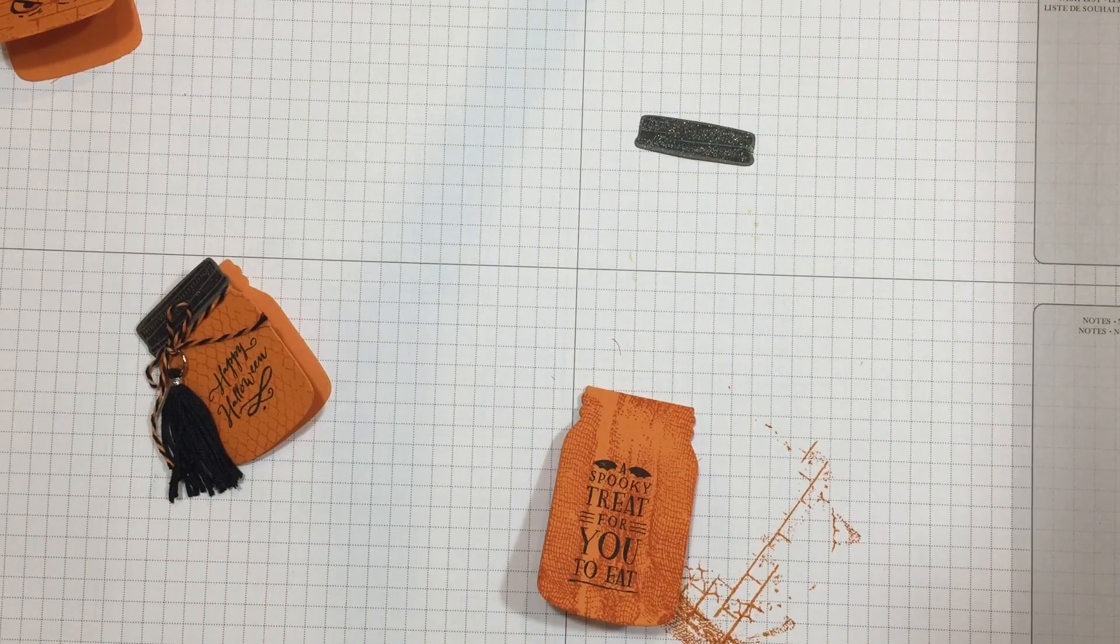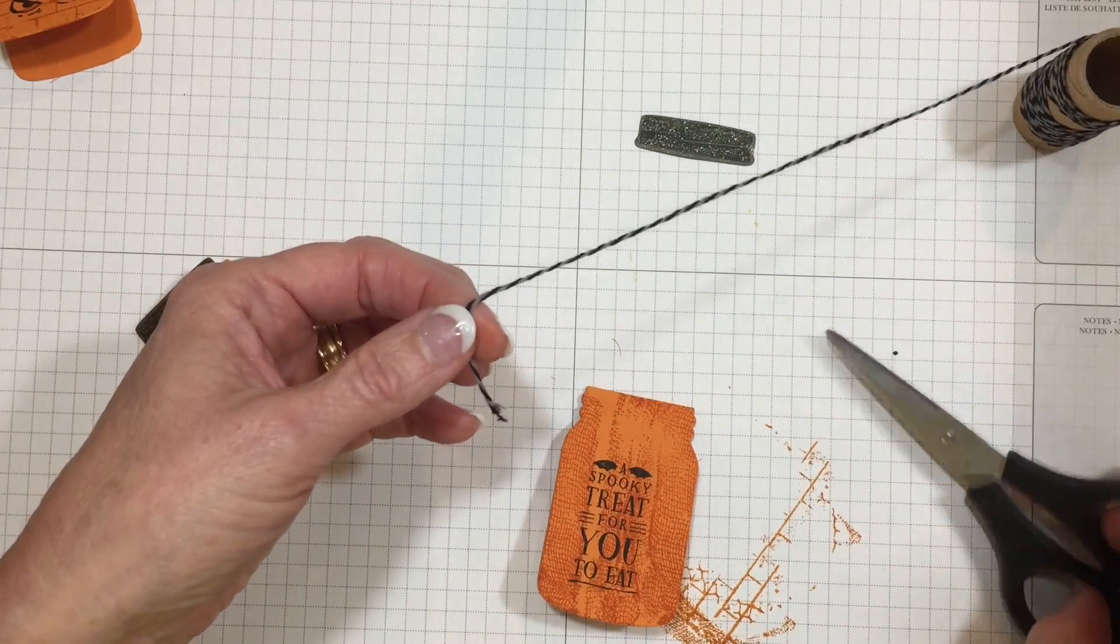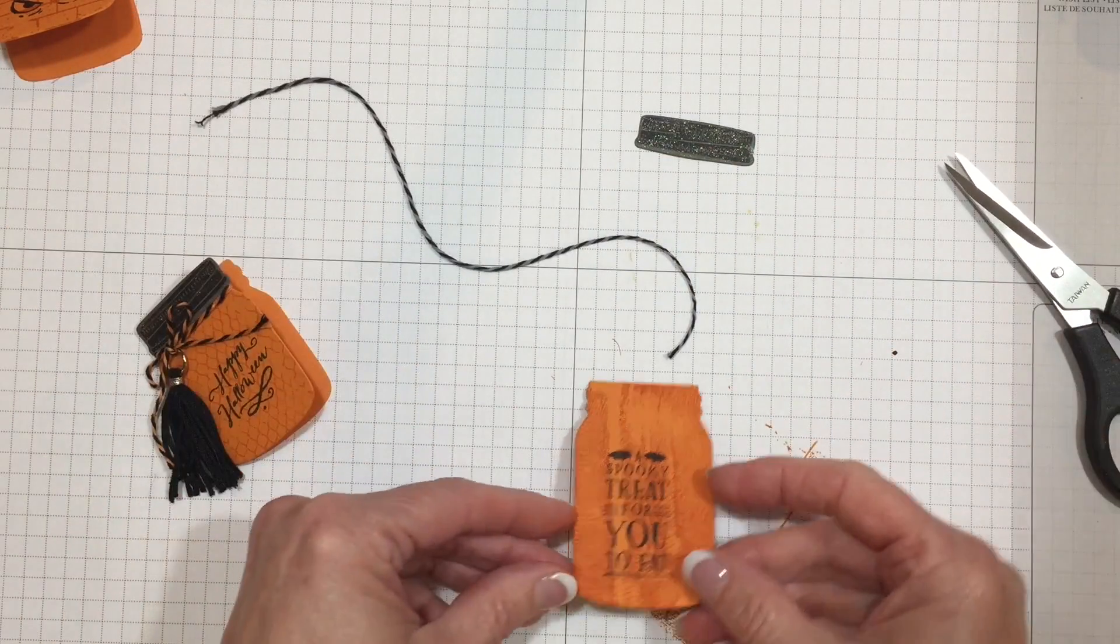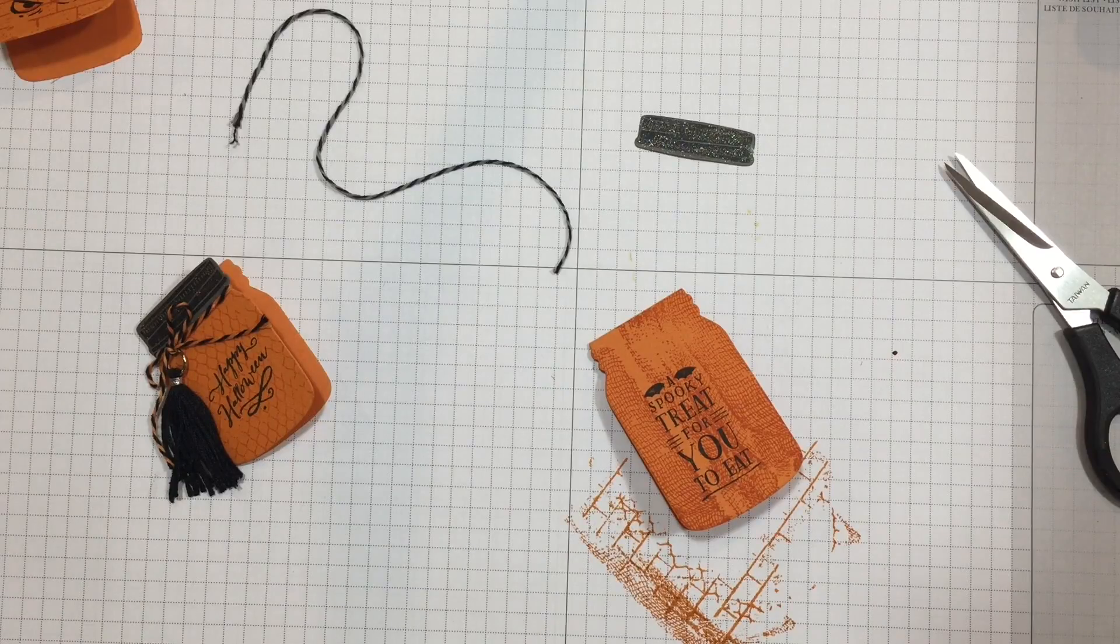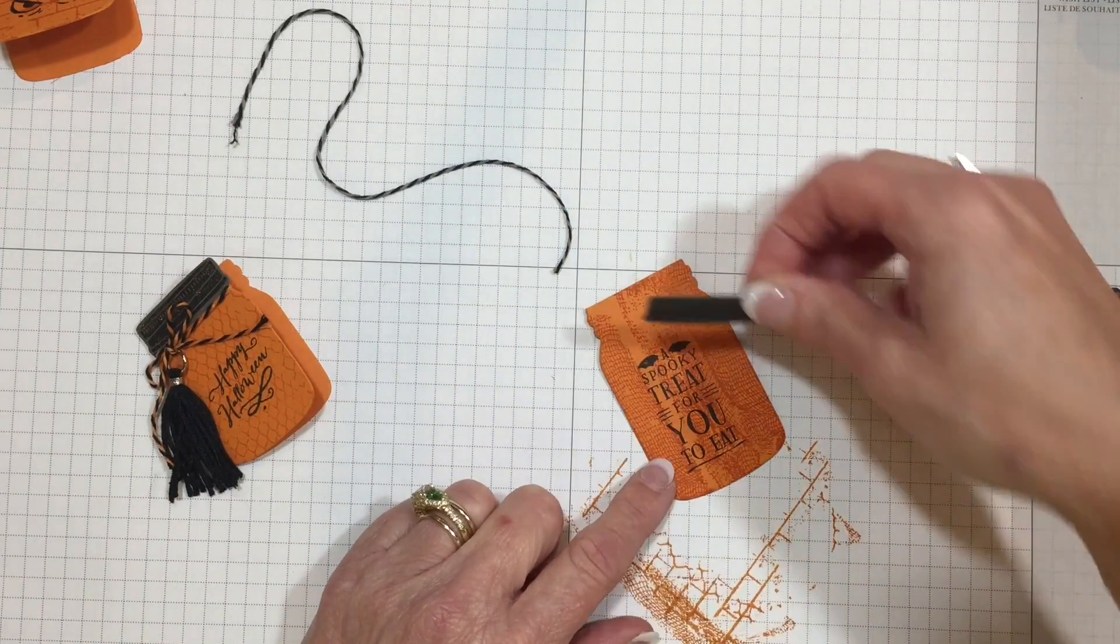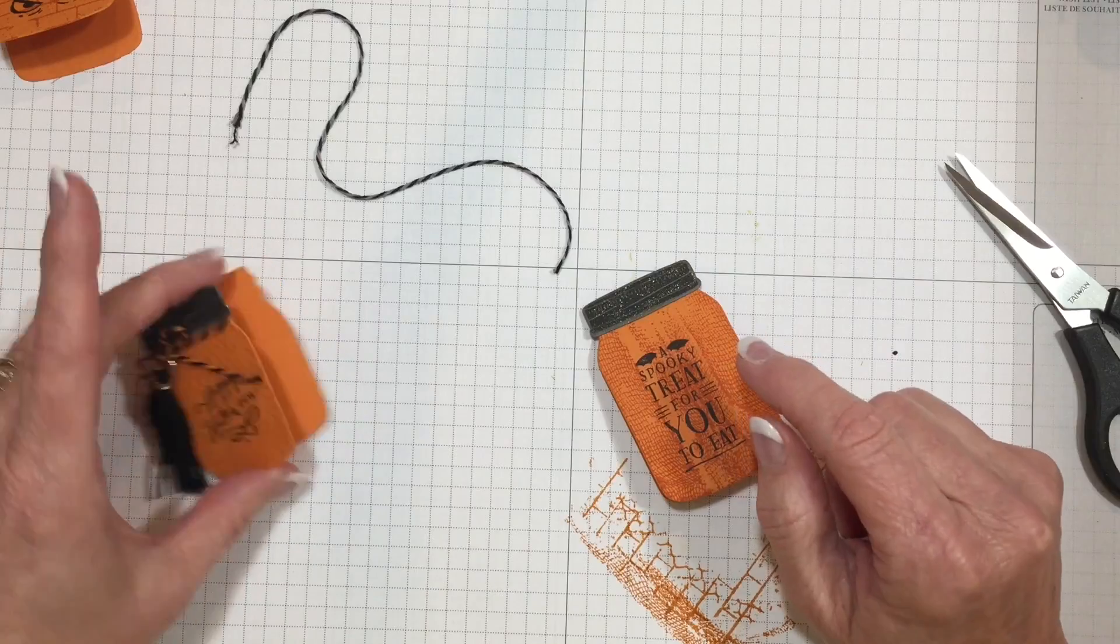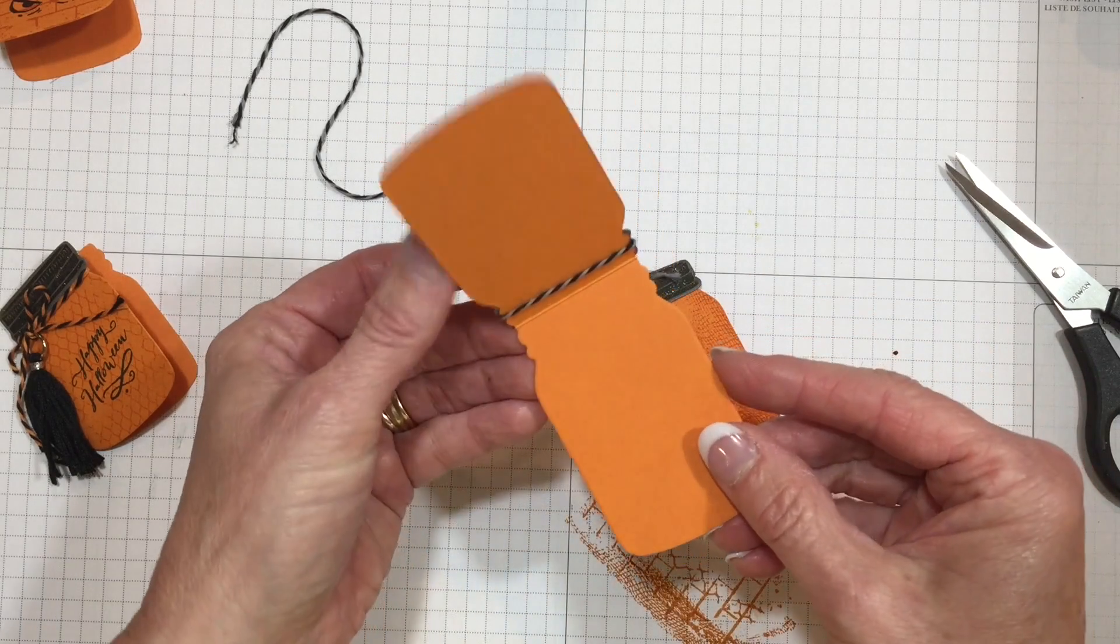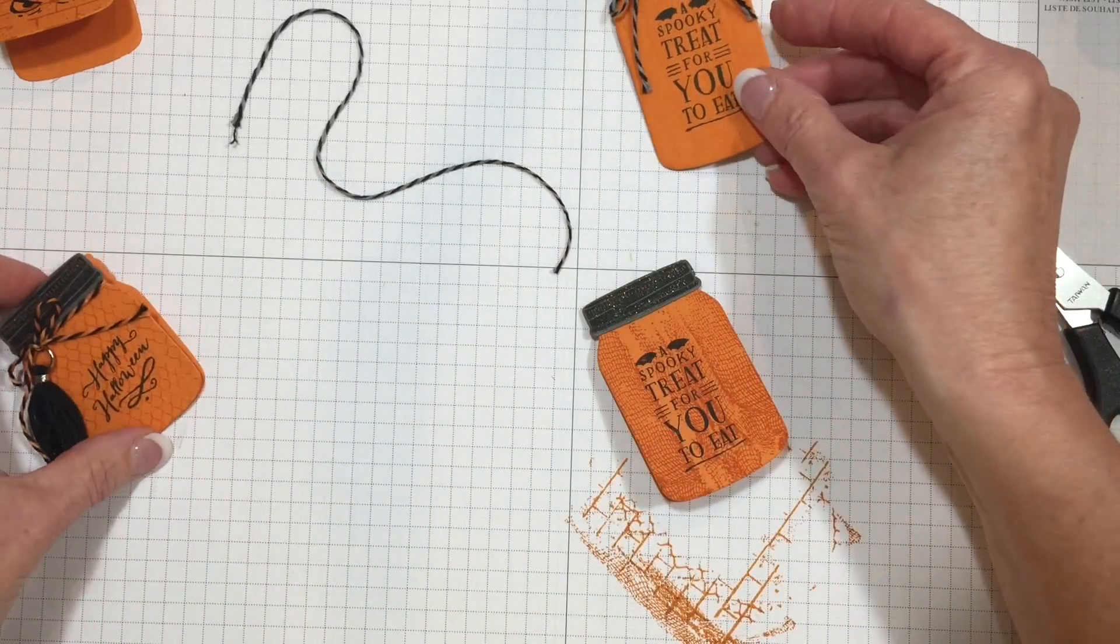While we're doing that, we can go ahead and cut our Baker's Twine. This is also part of the 2016 Holiday Catalog. You'll definitely want to take a look at that, and I'll put a supply list under the video. When you go to add your twine, all you're going to do is lift up, wrap your twine around the top part, and then tie this in a bow.